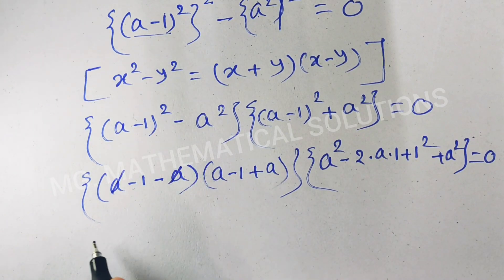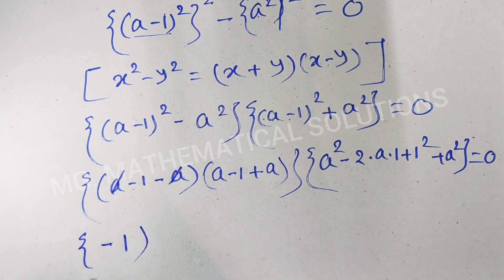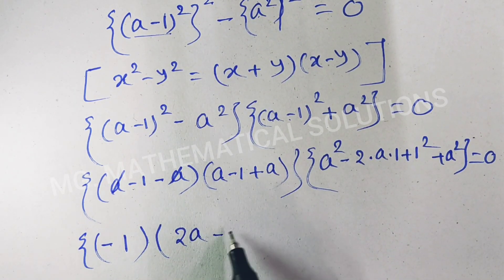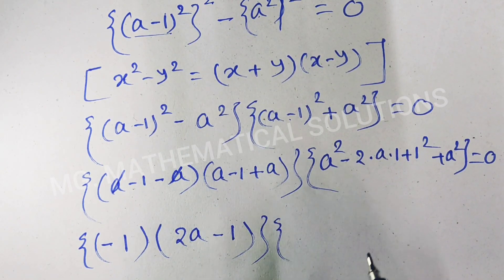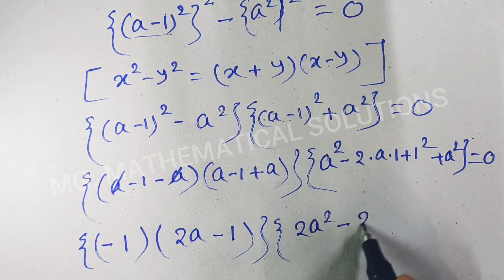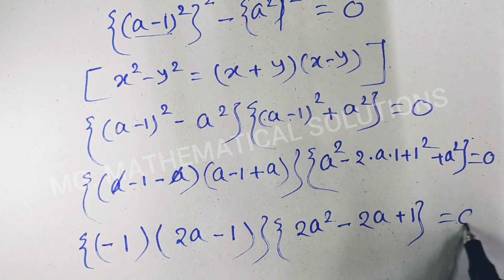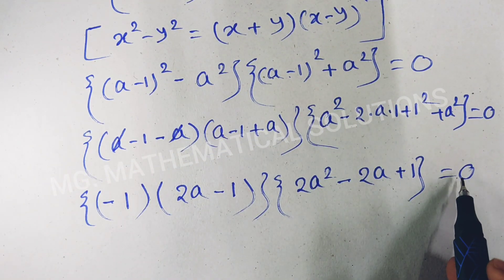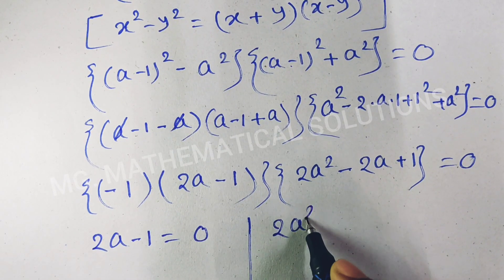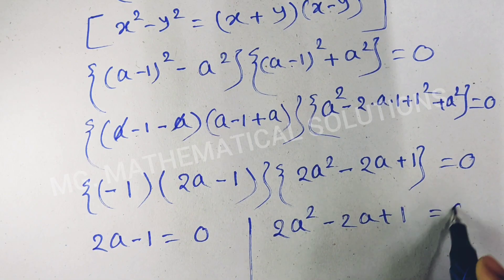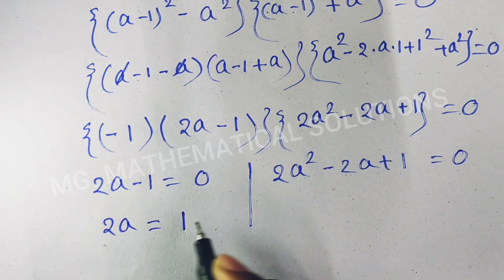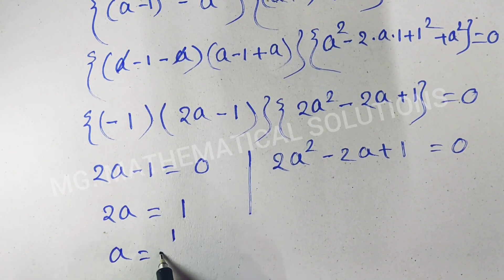After cancellation we get: (2a minus 1) times (a squared plus a squared), which means (2a minus 1) times (2a squared minus 2a plus 1) equal to 0. So either 2a minus 1 equal to 0, giving 2a equal to 1, so a equal to 1 by 2. Or 2a squared minus 2a plus 1 equal to 0.